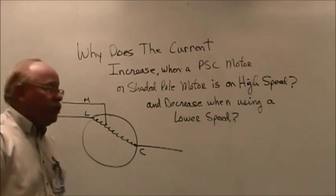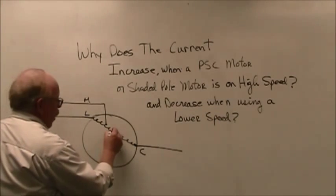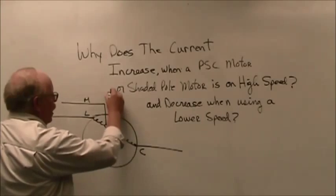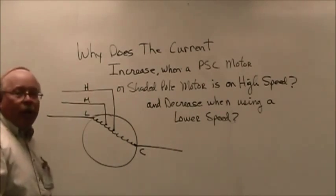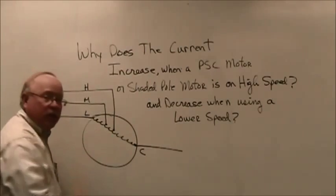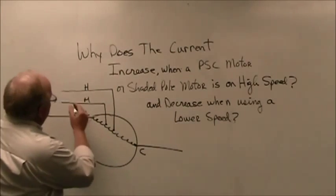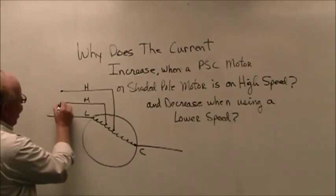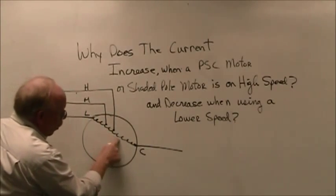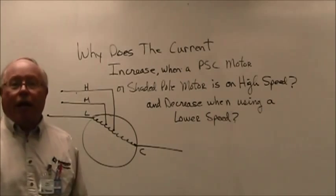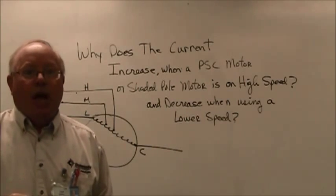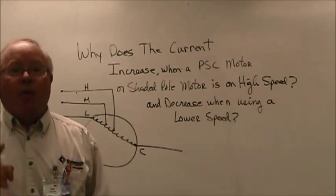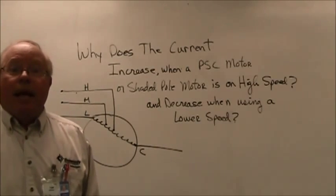But wait, let's go a step further. Let's go down into the winding and we'll tap into the winding even a little further down and we'll call this one H. And with this configuration, the power, if it comes in on H, it's now going to go through even less winding. Now, if it's going through less winding, that means less resistance. That means more amp draw with voltage remaining constant.